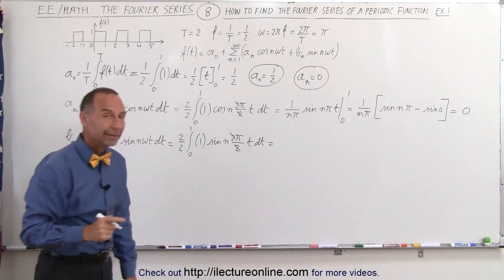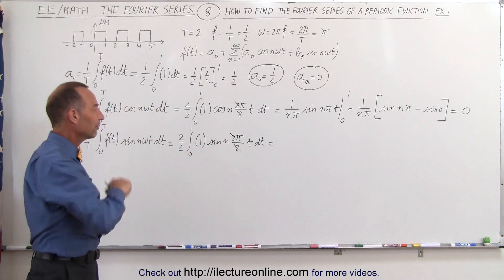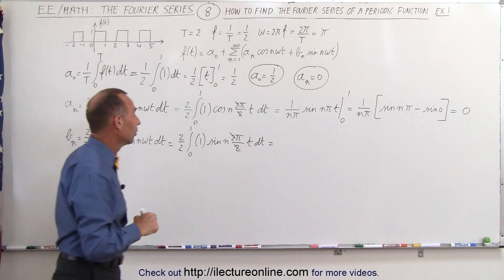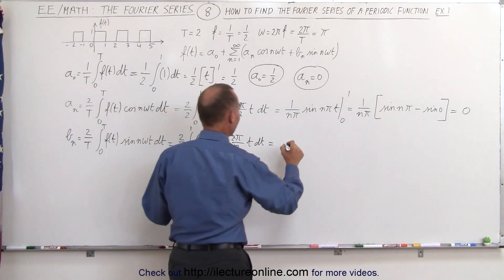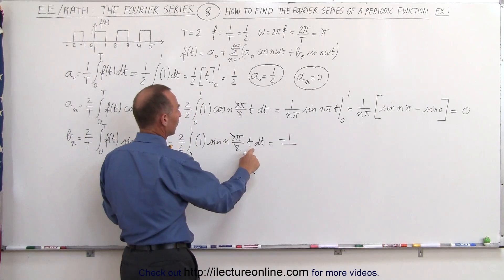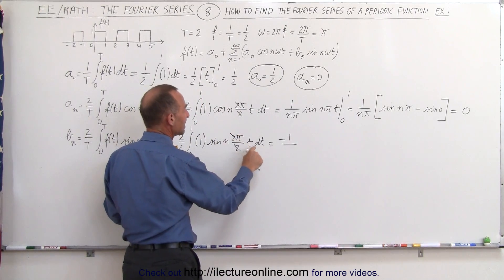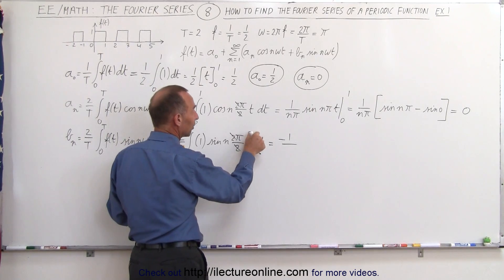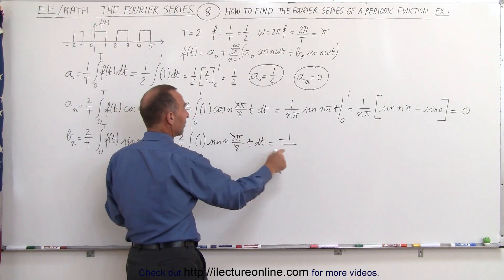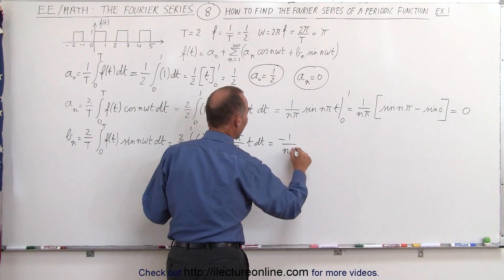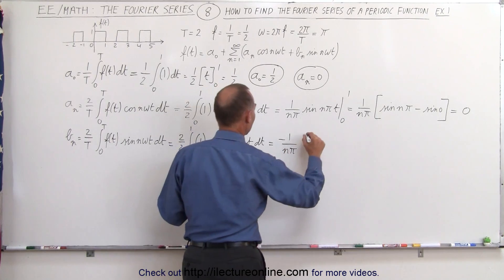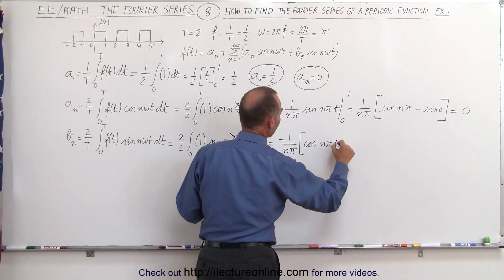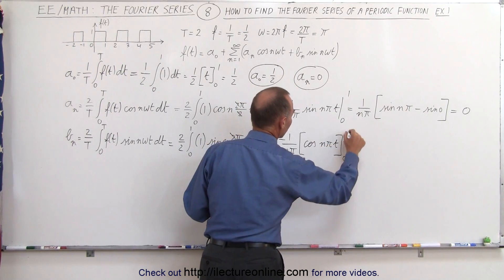The integral of the sine is the negative cosine, so we get negative 1 over n·π times the cosine of n·π·t evaluated from 0 to 1. We need the proper differential, so we multiply and divide by n·π to get n·π·dt.